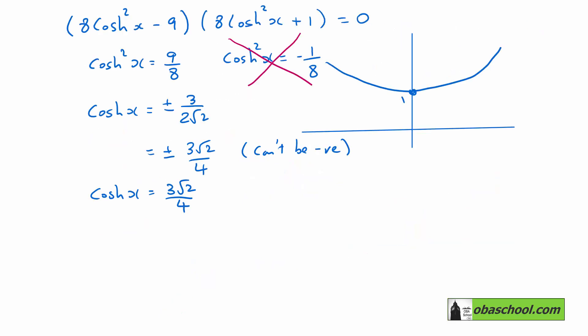Something we should know is that arcosh x is equal to the log of x plus the square root of x squared take away 1 and our x is going to be arcosh 3 root 2 on 4.